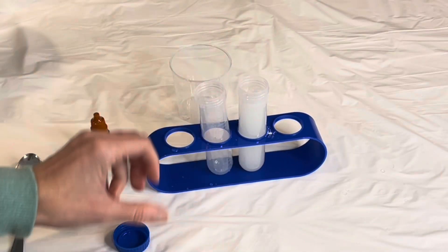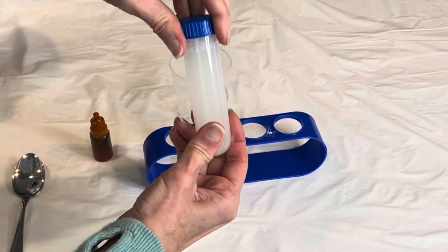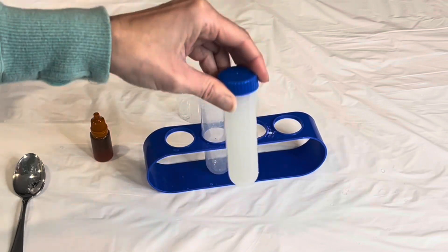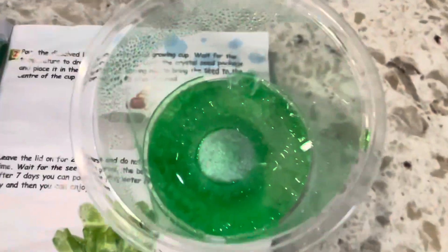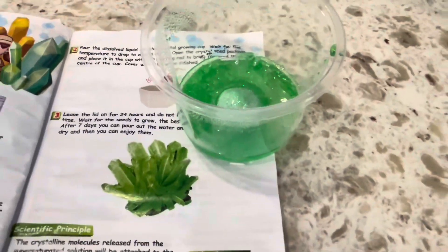Some of the experiments in the Unglinga set had really unclear instructions and a lot of the experiments just didn't work at all for me. Like that one, it was supposed to turn blue but it didn't. These crystals just aren't very impressive.